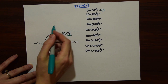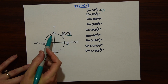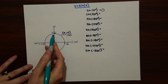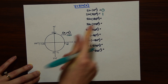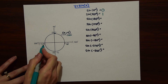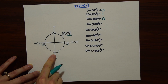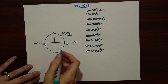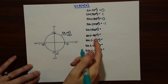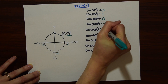Now if we look at sine of 90 degrees, we just look at the y value there and we know that's equal to 1. So we're just going to do this all the way around. Sine of 180 — the y value is 0. Sine of 270 is minus 1. Sine of 360 — we made it all the way around and we're back at 0 again.